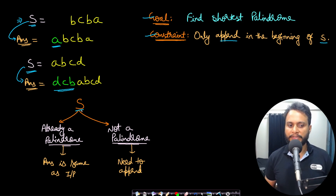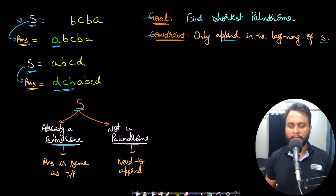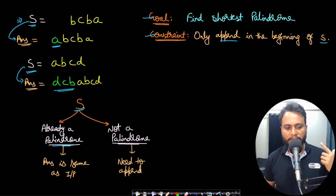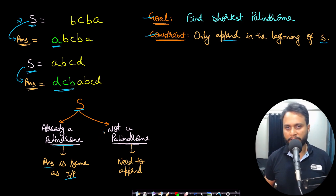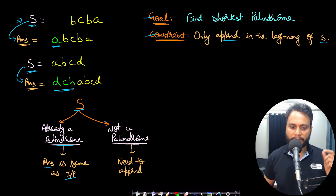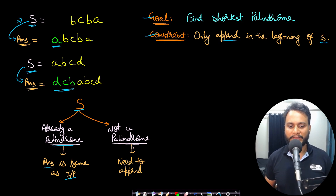If you consider an input string s, it can already be a palindrome or it may not be. If it is already a palindrome, the answer is the same as the input string and we do not need to append any character. But if it is not a palindrome, we need to do some append operations.